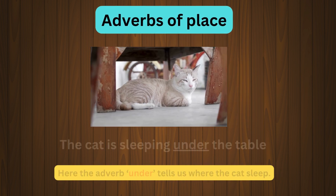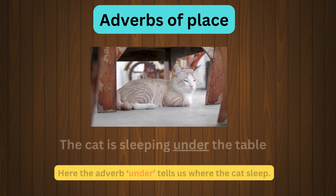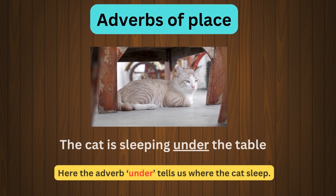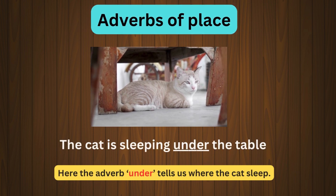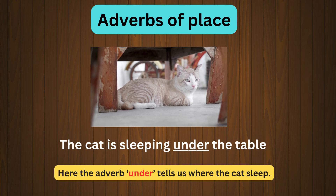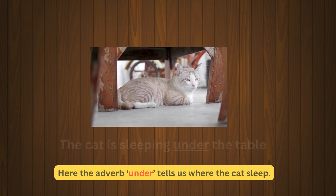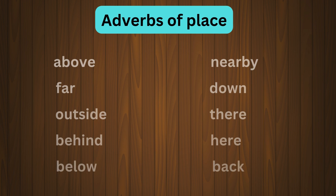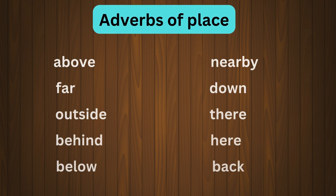Next example: The cat is sleeping under the table. Here the adverb 'under' tells us where the cat sleeps. These are some examples of adverbs of place that show where the action is happening.